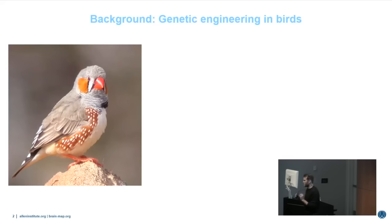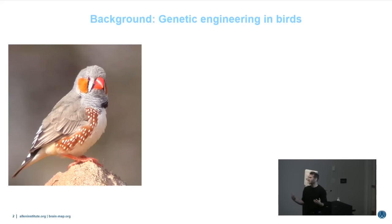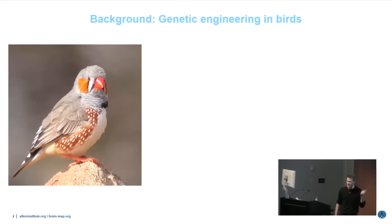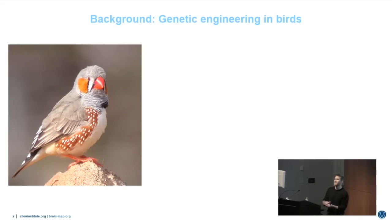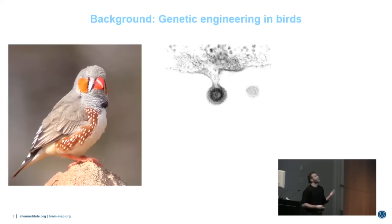There had also been really detailed characterization of the physiology of these circuits, but what was completely lacking was any tools for the generation of genetically modified birds — transgenic birds — that you might want to use to study the developmental process. This was not a problem unique to songbirds; it's a problem general across avian species. The techniques developed for mammalian transgenics could not be effectively used in birds because of differences in the reproductive biology, in particular egg-laying behavior.